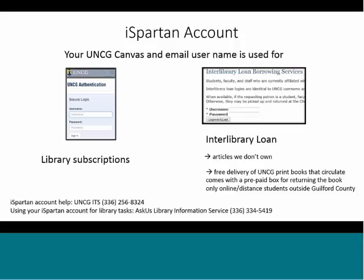What if you need help with these accounts? If you need help with your iSpartan username or password — especially if you're having trouble logging into Canvas, email, or several UNCG services — campus-wide ITS is the place to go. There's a help desk phone number and request form. Now, if you're having trouble getting into an article on the library website or into an e-book, please use the Chat with a Librarian or Ask Us Library Information Service.